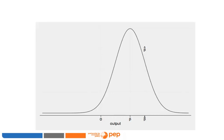Our estimator of the treatment effect — the difference of means — has the excellent statistical property of being centered on the true mean effect beta. We do not observe the estimator's distribution, nor the true treatment effect. However, we know that the ATE estimator of an RCT is unbiased. Unbiased means that the distribution of the estimator is centered on the true treatment effect beta.